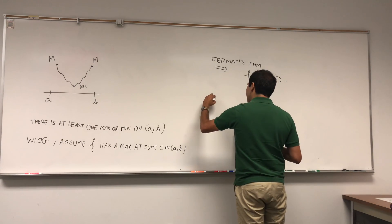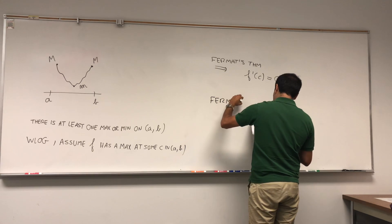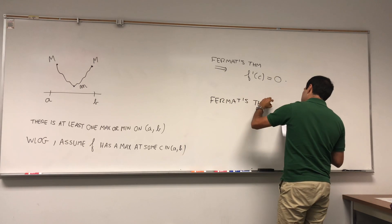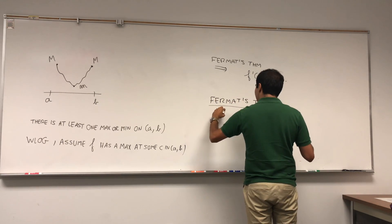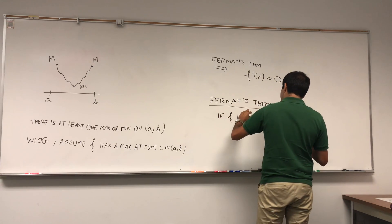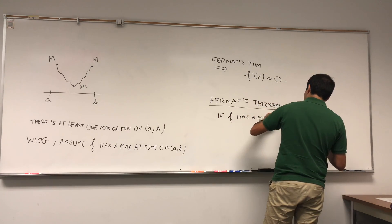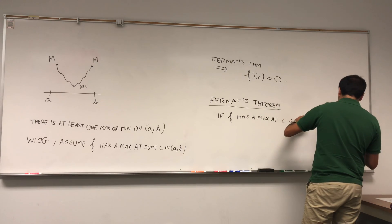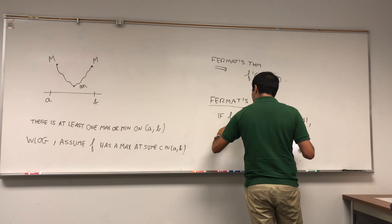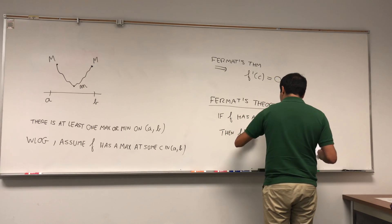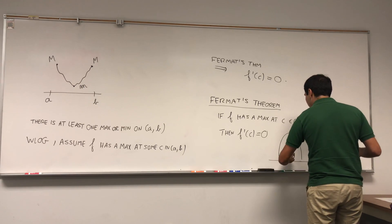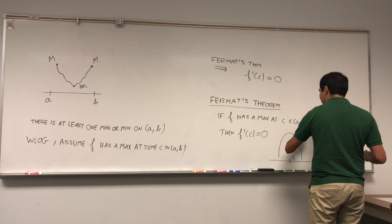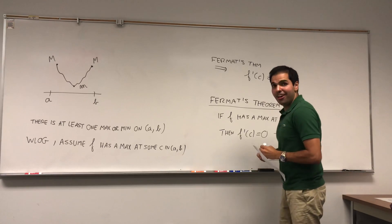What Fermat's Theorem says is that if you have a function that has a maximum on the open interval, then the derivative of that function has to be zero. So let me state it and prove it. If f is differentiable on (a, b) and f has a max — or a min actually — at c in (a, b), then f prime of c equals zero. The picture is: you have a point c where f has a maximum, and at that point f prime equals zero. And let's prove it — it does fit inside the margins.